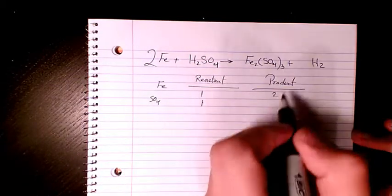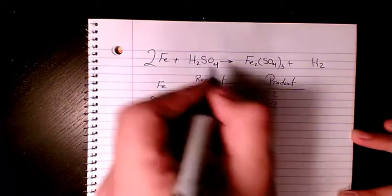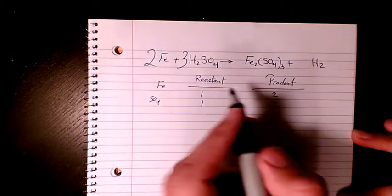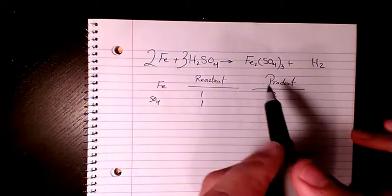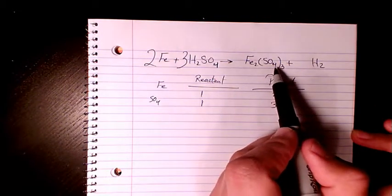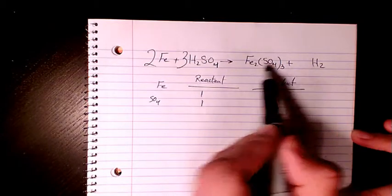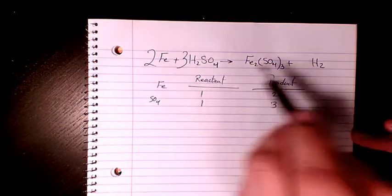And what about oxygen? Oxygen we have 12: 4 times 3 is 12, and 4 times 3 is 12 as well. What about hydrogen? Hydrogen we have three times two, six, and here we have two, so we need to put three here.